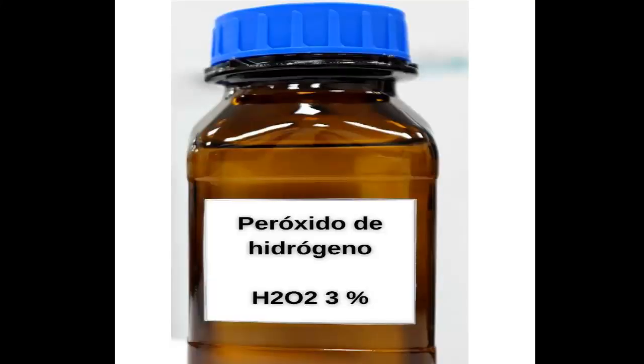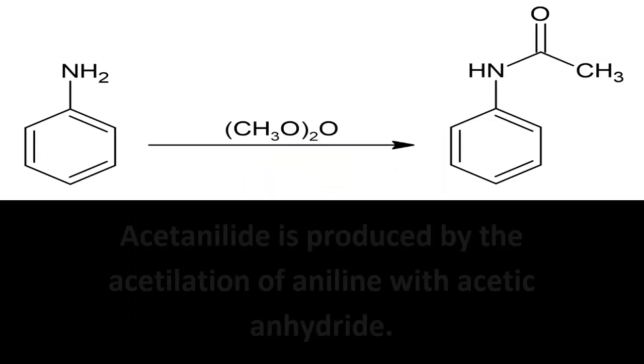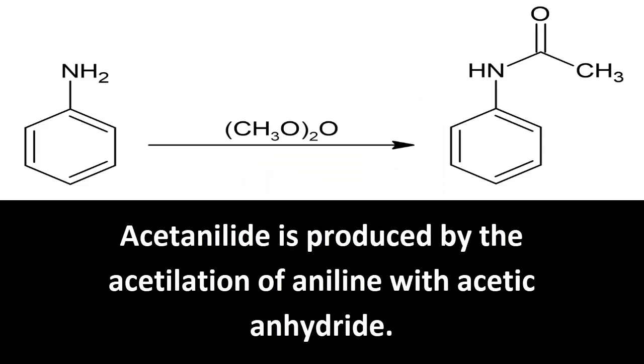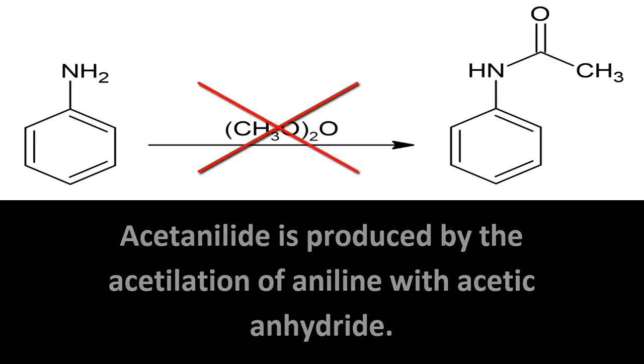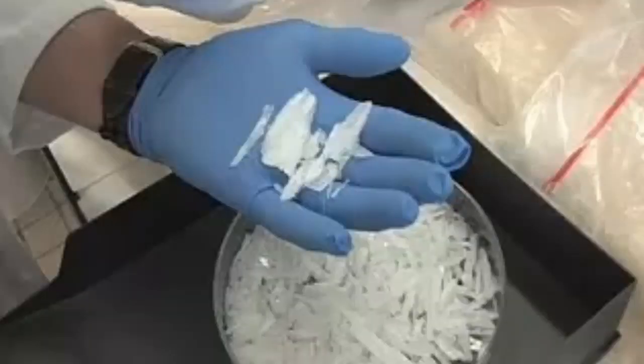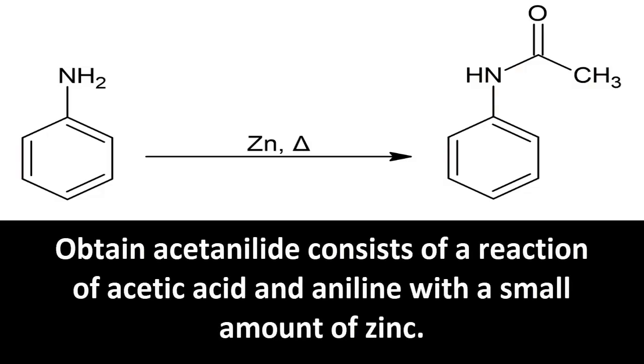Acetanilide is produced by the acetylation of aniline with acetic anhydride. In this video let's see how to obtain acetanilide without using acetic anhydride. Acetic anhydride is hard to find in some countries as it is used as a precursor to certain illicit drugs. To obtain acetanilide we will use a reaction of acetic acid and aniline with a small amount of zinc.